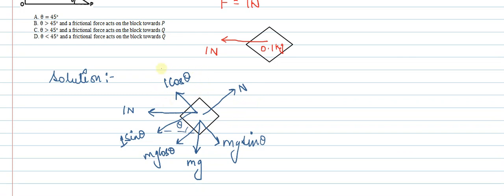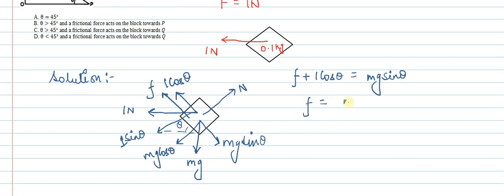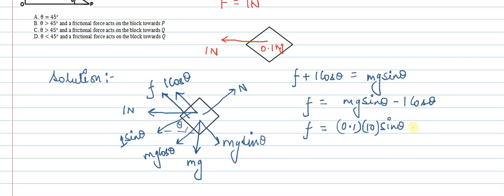Now considering the forces along the incline, we get the friction force. Writing the equilibrium equation along the incline: f plus 1 cos theta equals mg sin theta, which gives f equal to mg sin theta minus 1 cos theta. Substituting m equal to 0.1 and g equal to 10, we get f equal to 0.1 into 10 sin theta minus 1 cos theta.